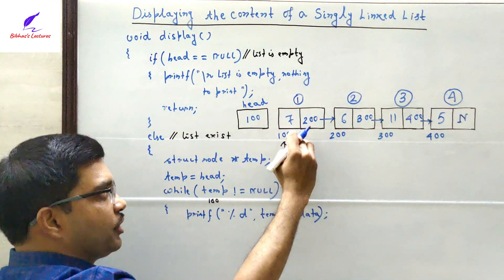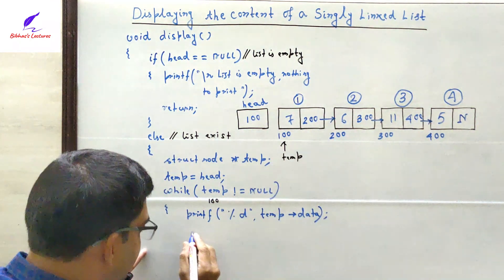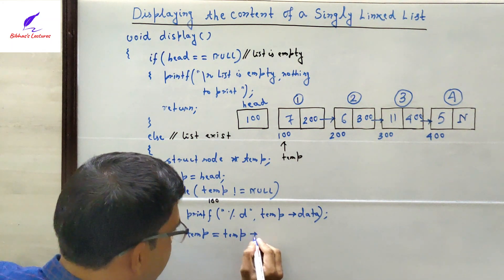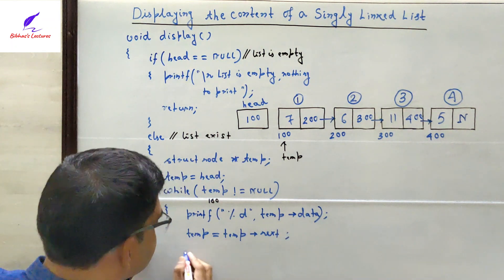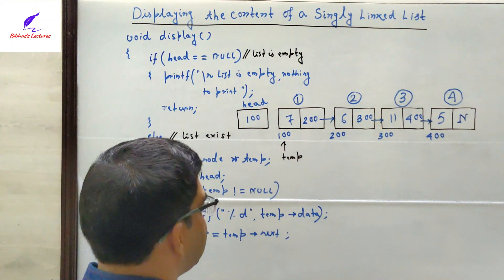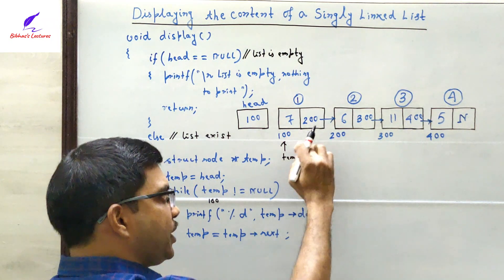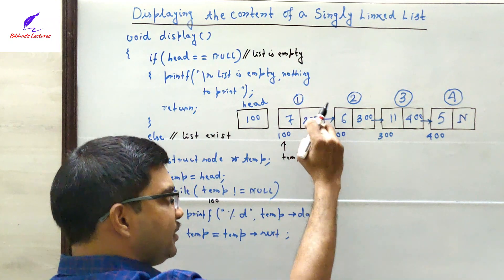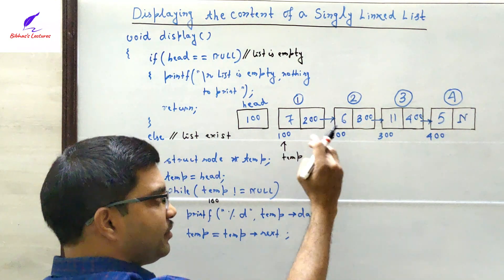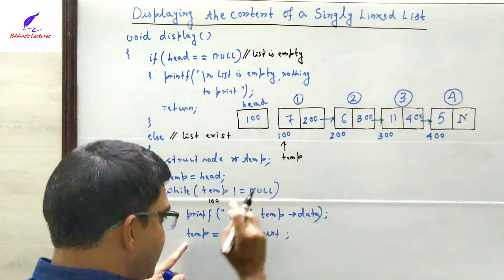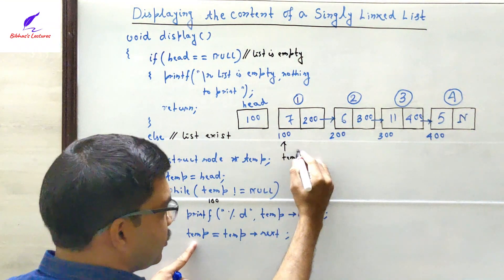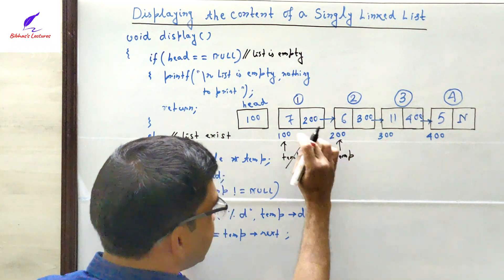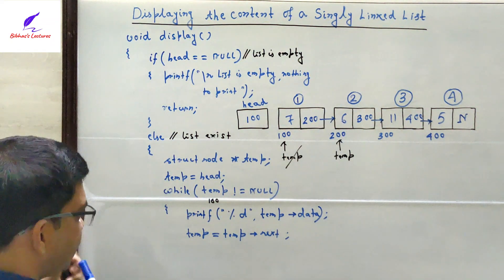After printing the data part of the first node, we shift temp from the first node to the second node by writing: temp = temp->next. The current temp is 100, and temp->next is 200 (the second node), so temp is shifted from 100 to 200 — from the first node to the second node. This closes one iteration of the while loop.